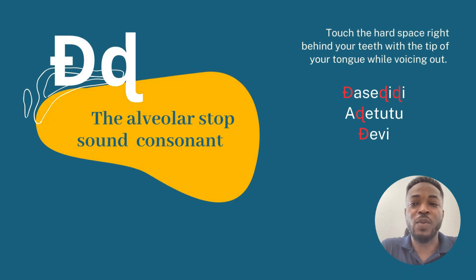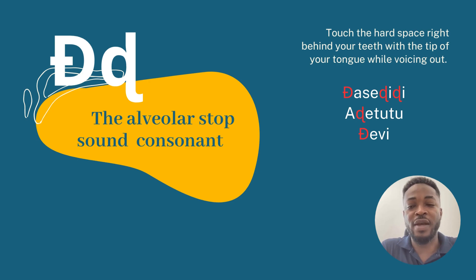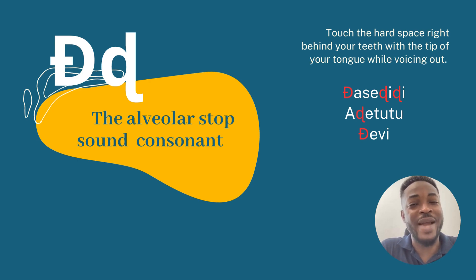The next one looks intimidating at first but it's actually very simple — it is the actual D sound in English and many other languages. Touch the hard part right behind your teeth with the tip of your tongue while voicing this out. In the English dialect there is a mild roll of the tongue. Words with this sound include 'da se di di.'